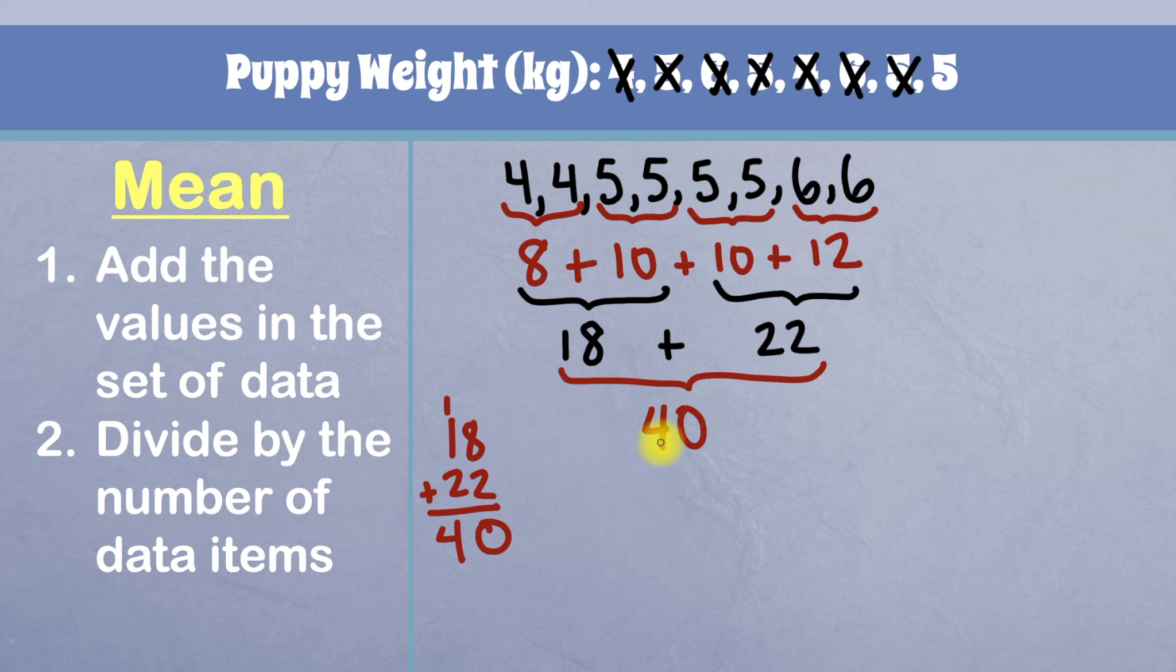Is this the mean? Not at all, because we're only done with step one, we still have to go through step two, which is to divide this sum we got by the number of data items.